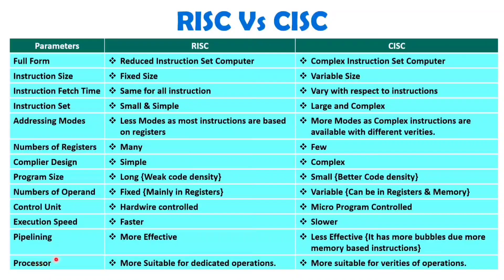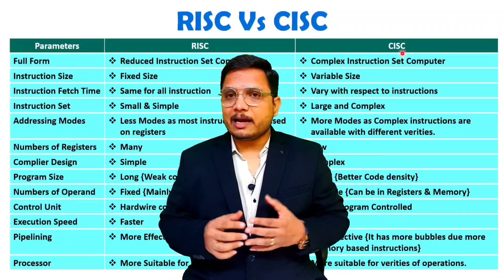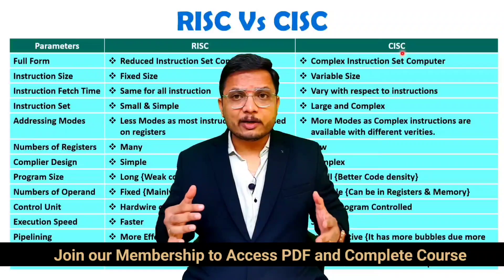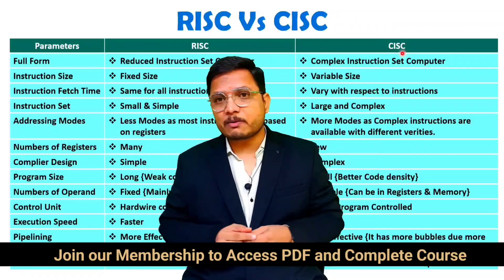RISC is more suitable for dedicated operations, while CISC is more suitable for varieties of operations because complex instructions are available. With RISC, you have fixed and simple instructions, so you perform dedicated operations. If you have varieties of operations, you should go for CISC. That is how RISC and CISC differ, and that is their design philosophy. If any queries remain, post them in the comment box. Thank you for watching this video.